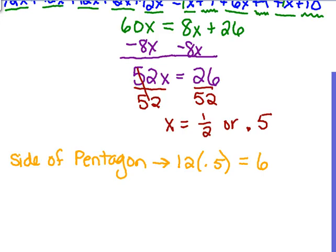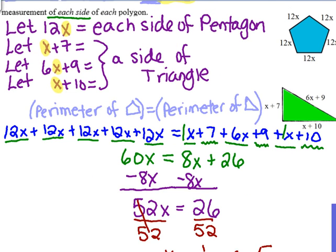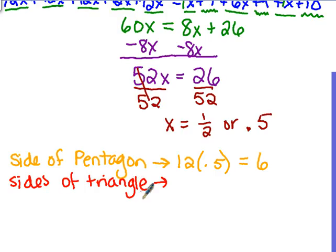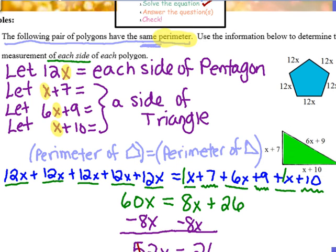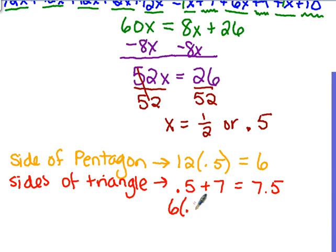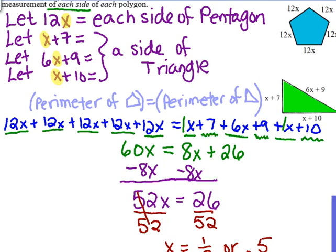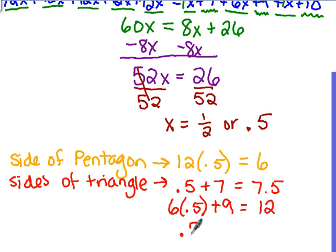We are going to find the side of the pentagon. My work is nice and neat and organized and labeled. We know that the side of the pentagon was represented by 12x according to our let statements. So I am going to plug in half for x, evaluate this, and we get 6. I am going to do the same thing for each side of the triangle. Go back to my let statements. x plus 7 was the first one. So we have half plus 7, that equals 7.5. Another let statement was 6x plus 9. So now we have 6 times a half plus 9. 6 times a half is 3, and then 3 plus 9 equals 12. One more side: x plus 10. So a half plus 10 equals 10 and a half. Just like that. So we found all three sides.